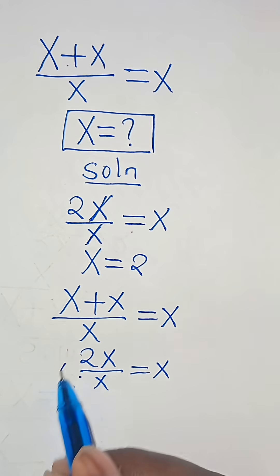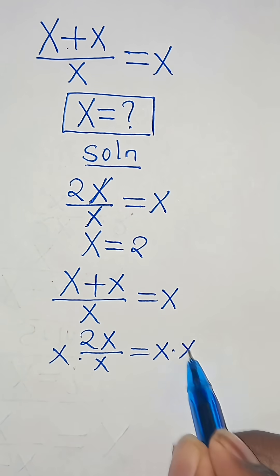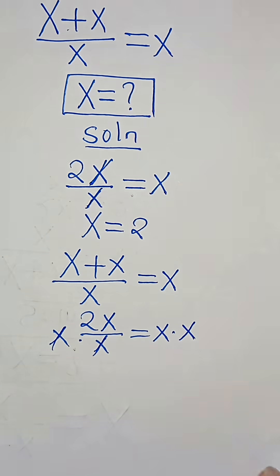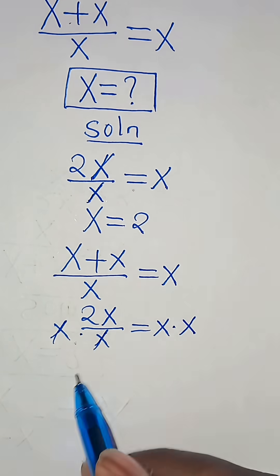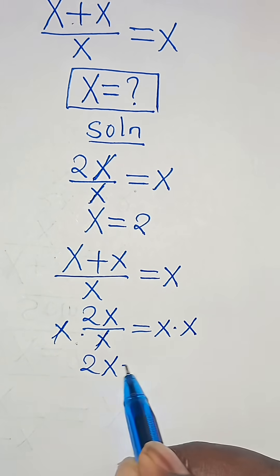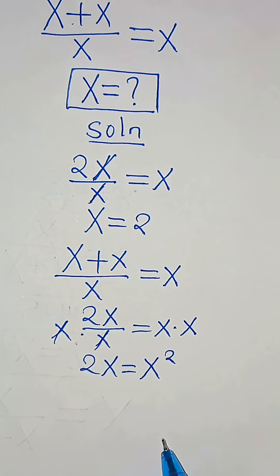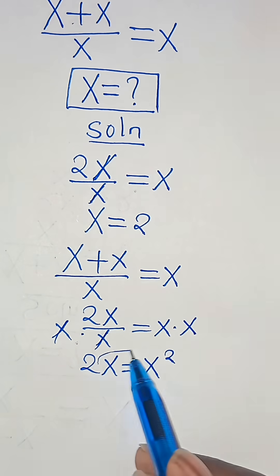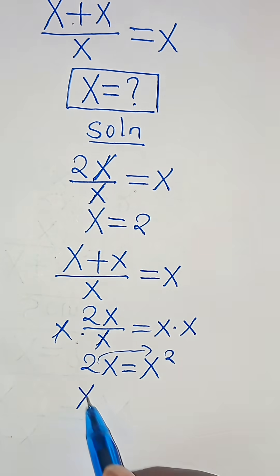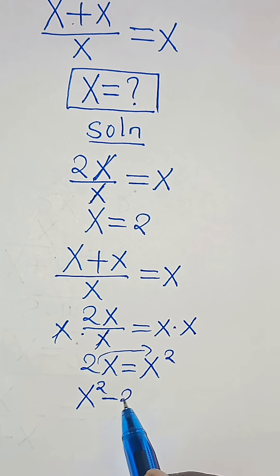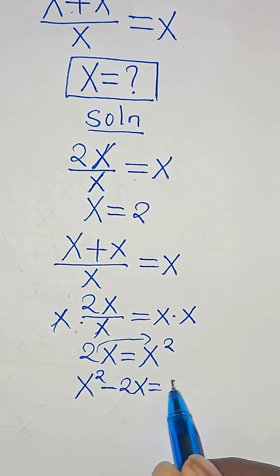So let's multiply both sides by x, and also here by x, so that now here we have 2x. This is equal to x times x, which is x to the power of 2. Now let's take 2x on the right hand side, so this is x to the power of 2 minus 2x, this is equal to 0.